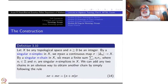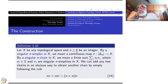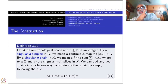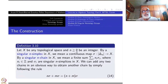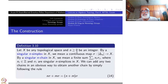Take a topological space X. For N greater than or equal to 0, we are going to define the chain groups. The chain complex is going to be a non-negative one; for negative indices, we take them all 0. For N greater than or equal to 0, a singular N-simplex in X is nothing but a continuous map from Δ_N to X, where Δ_N denotes the standard N-simplex in R^(N+1).